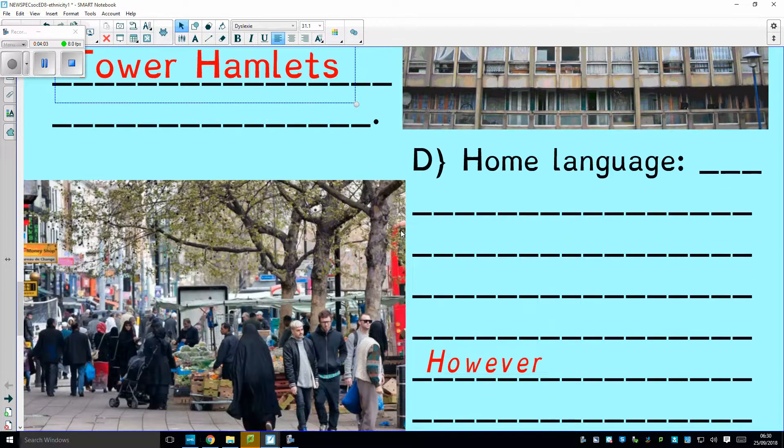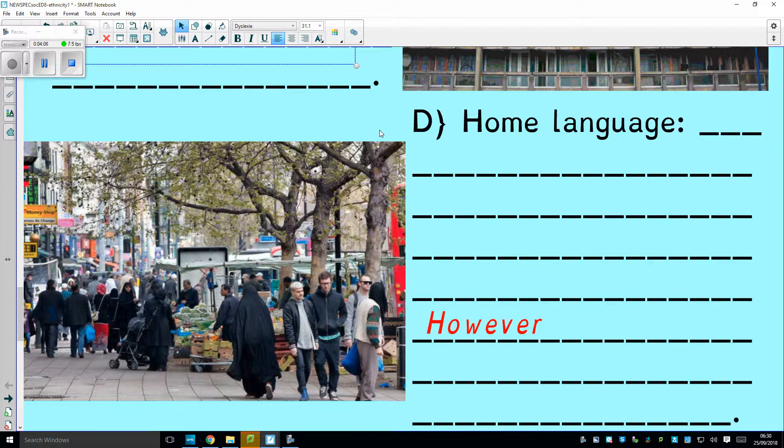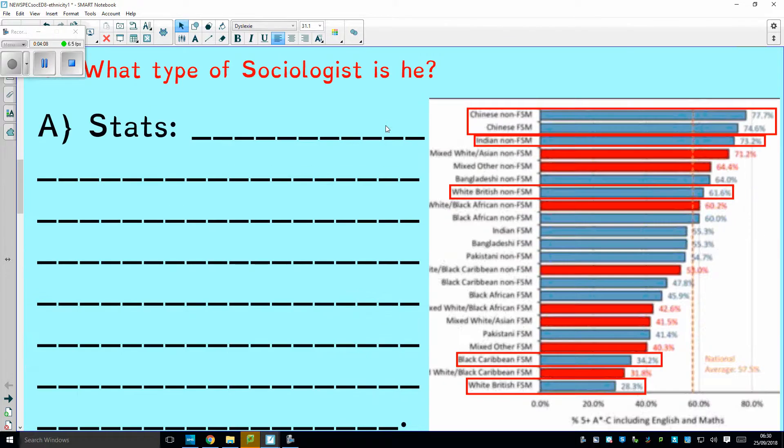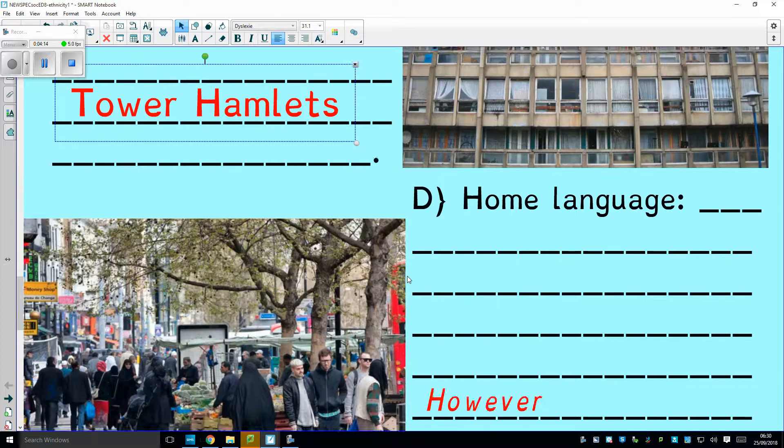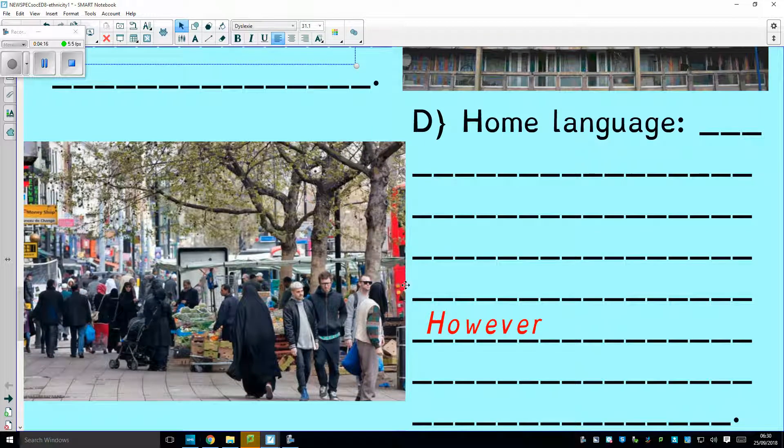So other people say, no, you know what, it could be home language. If you look at some of these groups here, their parents don't speak English. And it could be that that is what's holding them back at school. The parents can't read to them when they're kids in English, because they don't speak English. And that probably is a factor.